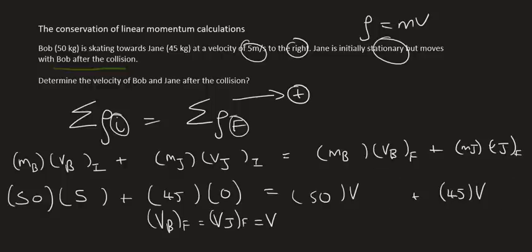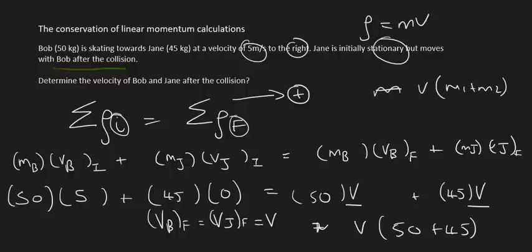Now what some teachers like to do, and you can do this but you don't have to, because their velocities are the same, some teachers take out a common factor of V and then they just add their masses together. So if your teacher ever does something where they take out the velocity and then they say mass 1 plus mass 2 or anything like that, you can do it like that. It's absolutely fine. You can also do it the way I'm doing it here.